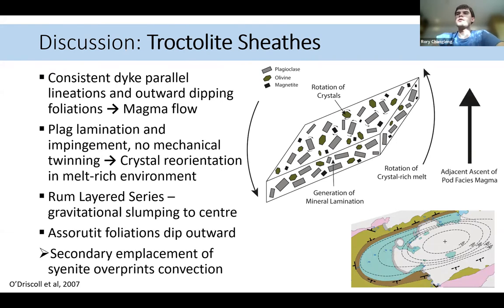So in the run layered suites, this is generally attributed to slumping and it's gravitational towards the center. However, here, what I'm attributing to is the adjacent ascent of this magma in the center, this syenite material, which is causing this reorientation. And so this could be a strong indication that we're having secondary emplacement going on here.